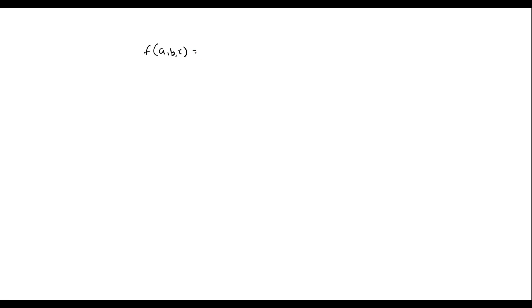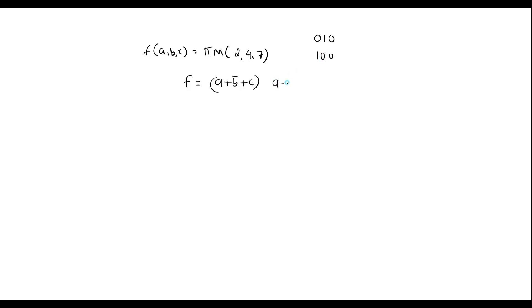Now for the second function: f(A, B, C) = πM(2, 4, 7). The notation πM indicates it is a maxterm expression. Maxterm 2 is 0,1,0 which gives (A + B̄ + C); maxterm 4 is 1,0,0 which gives (Ā + B + C); and maxterm 7 is 1,1,1 which gives (Ā + B̄ + C̄).